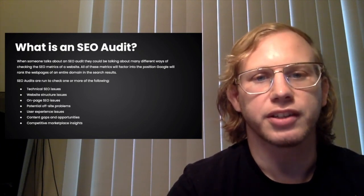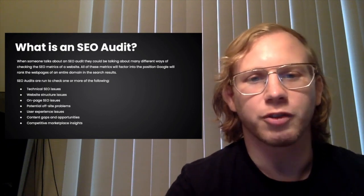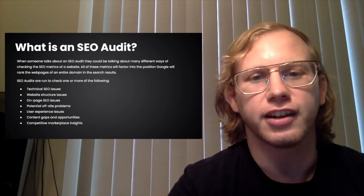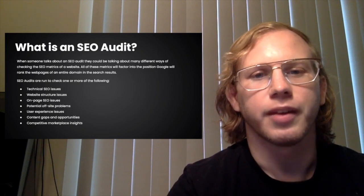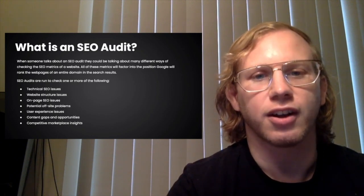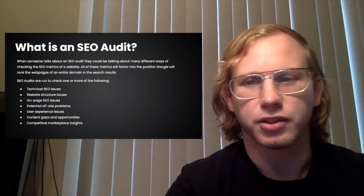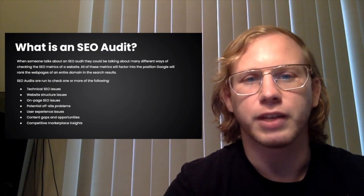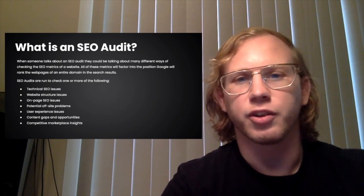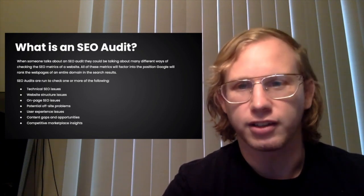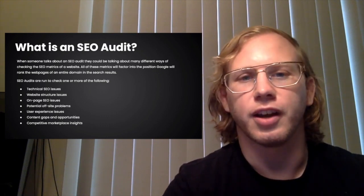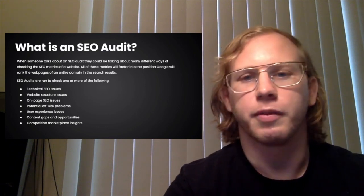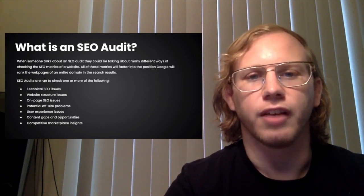On-page SEO issues — on-page SEO is anything that's actually on the page of a website. These are things like your title tags, alt text for images, keywords in your header. You want to perform best SEO tactics on the actual pages of your website. Potential off-site problems — let's say you have a website about cats, and all the other information on the internet about your website says it's about dogs. Google might be confused about what the website's actually about and recommend it lower in the search results.